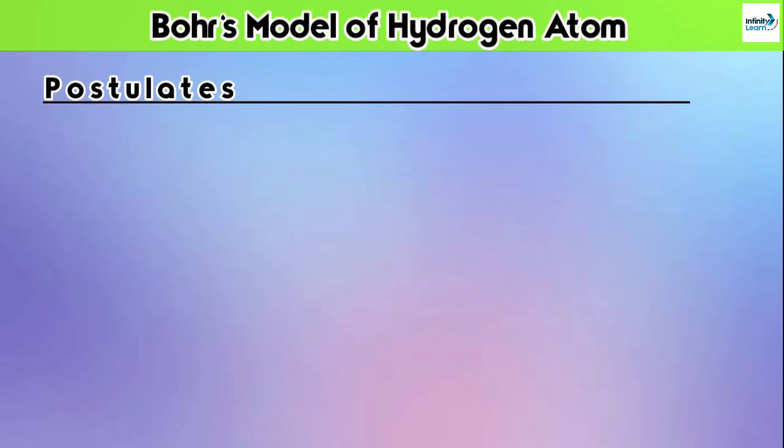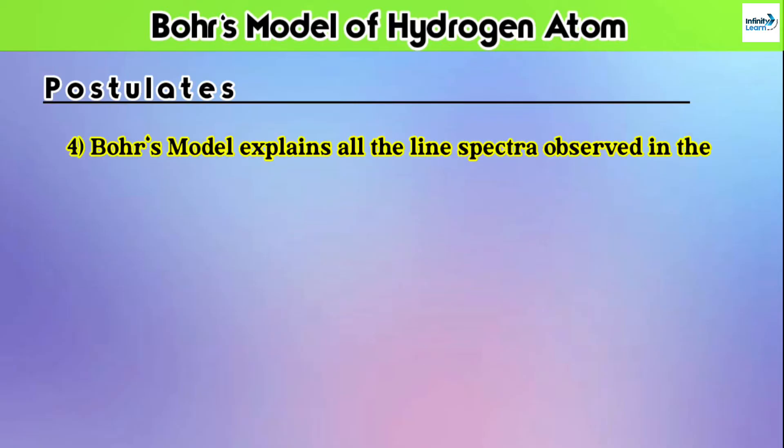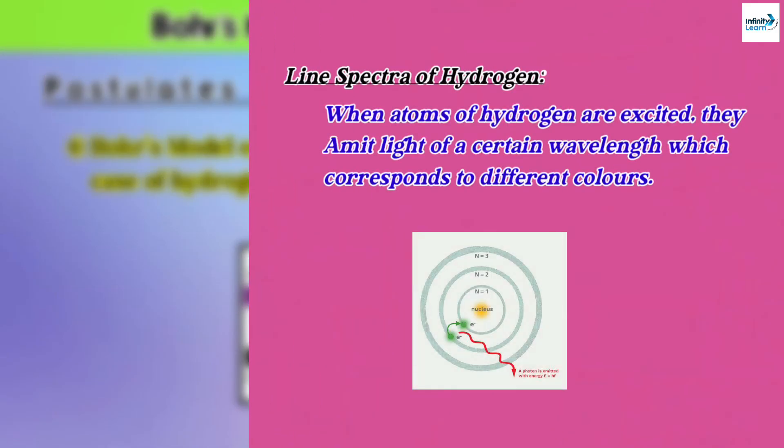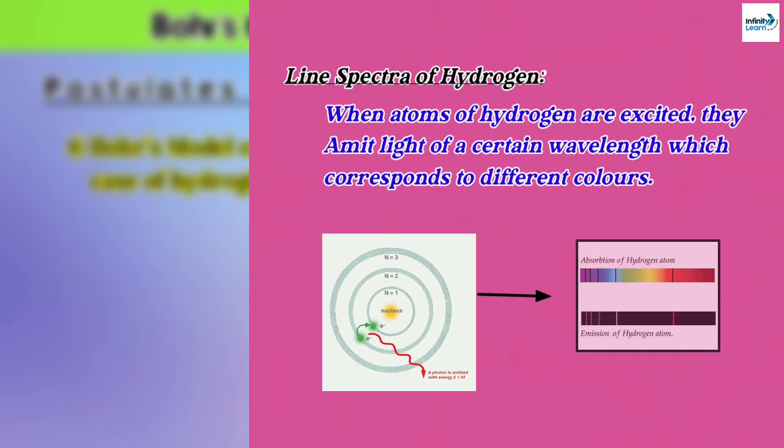The fourth and last postulate is: Bohr's model explains all the line spectra observed in the case of hydrogen atom. Bohr's model is completely successful in explaining the line spectra of hydrogen atom. Line spectra of hydrogen atom means when atoms of hydrogen are excited, they emit light of a certain wavelength which corresponds to different colors. It's called line spectra of hydrogen.